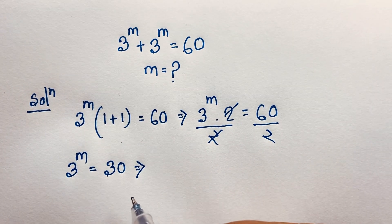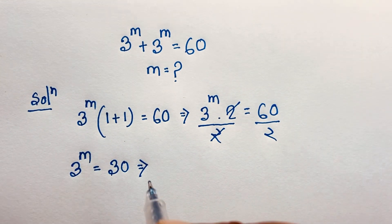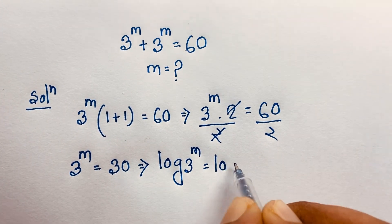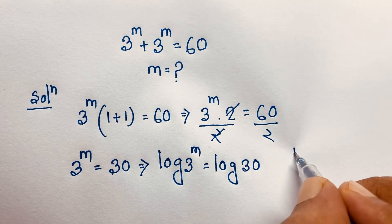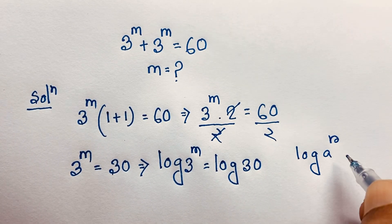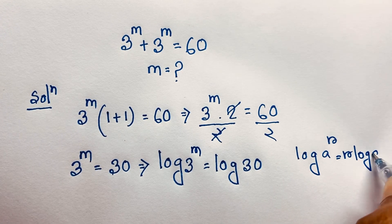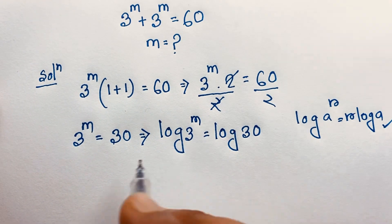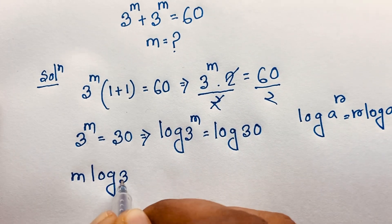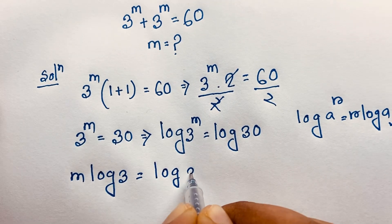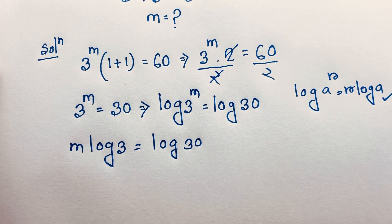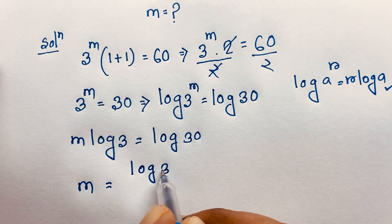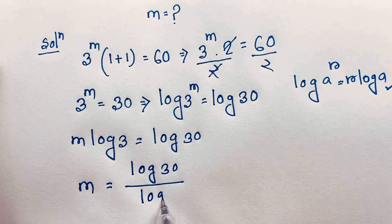Now I apply the natural log to both sides: log of 3 to the power m equals log 30. Using the logarithm rule — log of a to the power r equals r times log a — we get m times log 3 equals log 30. Dividing both sides by log 3 gives m equals log 30 over log 3.